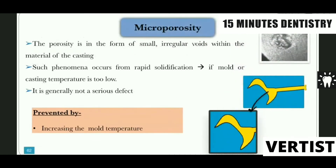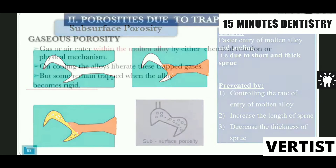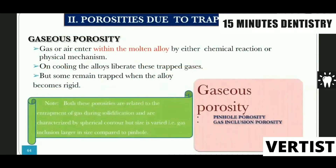Hot spots are prevented by proper attachment at 45 degrees. Micro porosities are irregular voids within the material occurring when solidification occurs at improper temperatures; this is not a very serious defect and can be addressed by increasing the mold temperature. Subsurface porosities occur whenever there is too much of a rush during casting procedures.